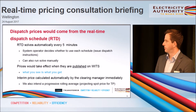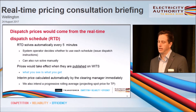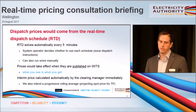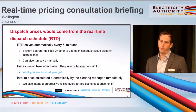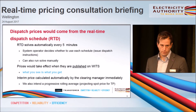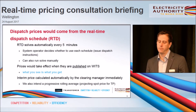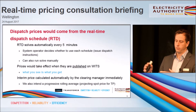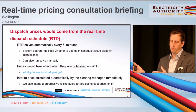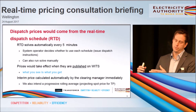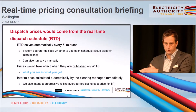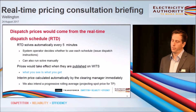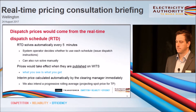The interim price will be calculated automatically and we're proposing that the clearing manager will take that task. Tim also mentioned that we have in mind, not in the code amendment proposal but as an intention, a progressive rolling average that will be displayed on WITS or perhaps through alternative mechanisms, projecting forward what the spot price for that trading period is likely to be.